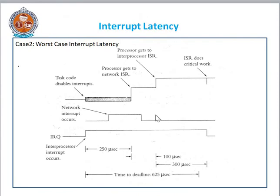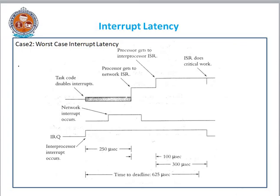In the second worst case, again task code disables the interrupts and an IRQ is received. But here a network interrupt also occurs — there is some request from the network. This request is also delayed until 100 microseconds. Actually, disabling interrupts takes 50 microseconds, plus the network interrupt occurs for 100 microseconds. After this 100 microsecond delay, the microprocessor loads the address of the ISR and executes it, which takes 300 microseconds. So the total time again increases to 625 microseconds. This is the worst case interrupt latency.